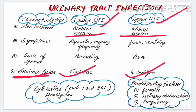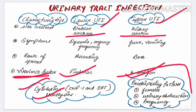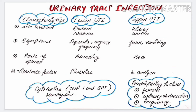Predisposing factors — what type of hosts are more susceptible to UTI? First, females are more susceptible than males because of the short urethra and its proximity to the anus. Second, urinary obstruction: persons with renal stones are more susceptible. Third, pregnancy causes physiological obstruction in the urinary tract due to the growing fetus, making pregnant women more susceptible to UTI.